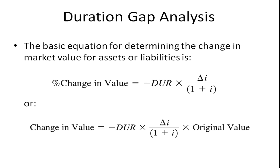We're going to use the following formulas. The percentage change in value equals minus the duration times the change in interest rates, divided by 1 plus the interest rate. If you want the dollar change in value, it's that same formula times the original value. That makes sense — if the percentage change in value is 2% and you have a hundred million, you multiply 2% times a hundred million and the change in value is 2 million.